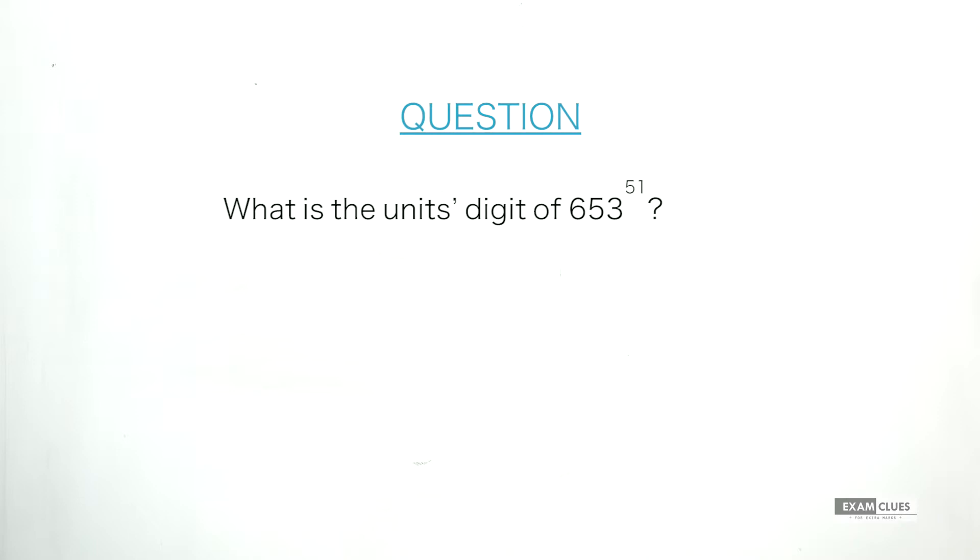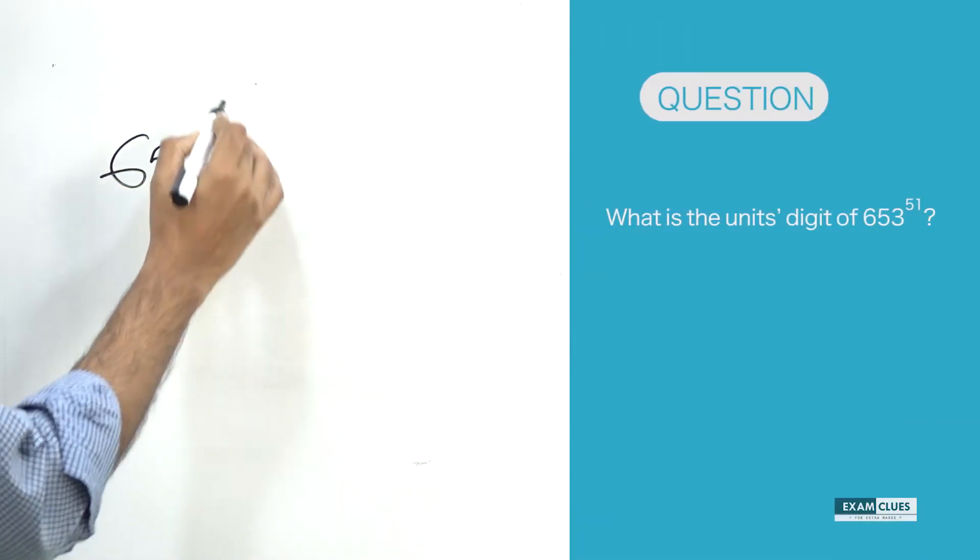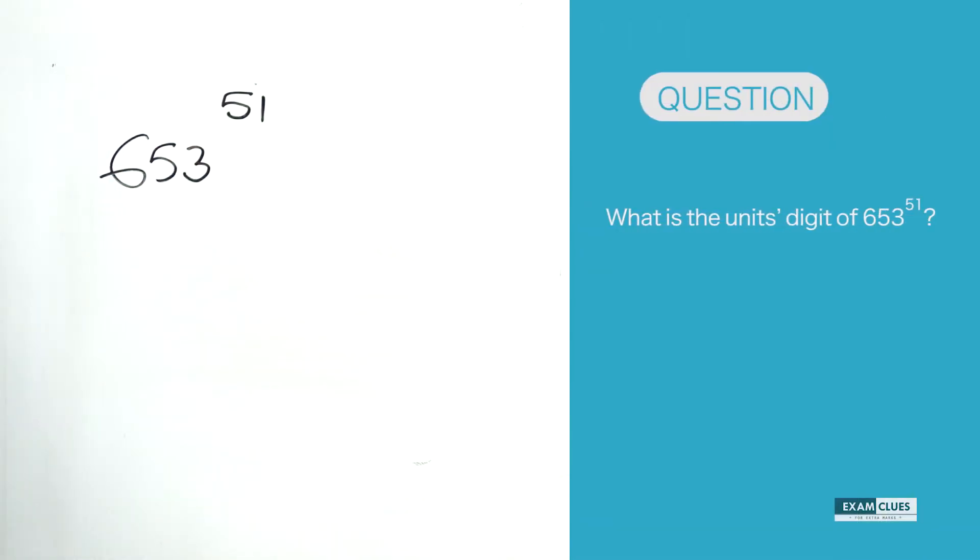It's a very big number, we can't write it on the board. The question is: what is the last digit or the units digit of 653^51? Though it's looking like a complex question, these are pretty easy questions if you know the concept of cyclicity. 653^51 is the given number and we need to find what the last digit is going to be.